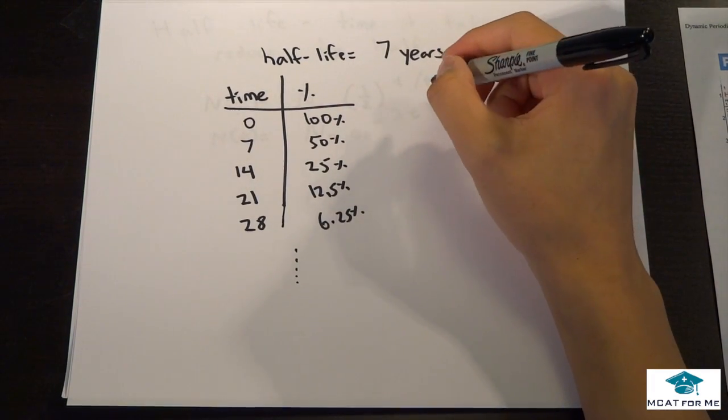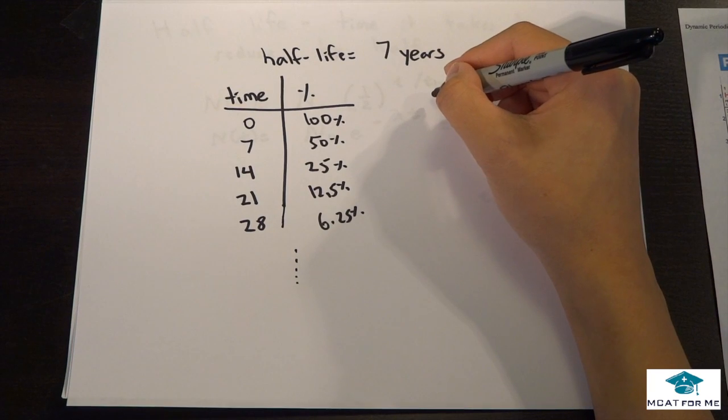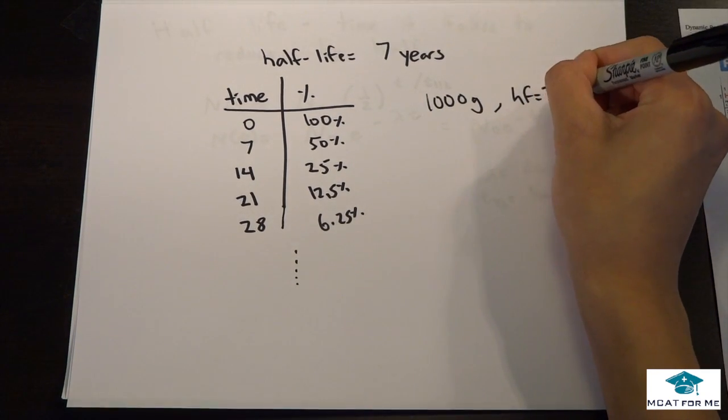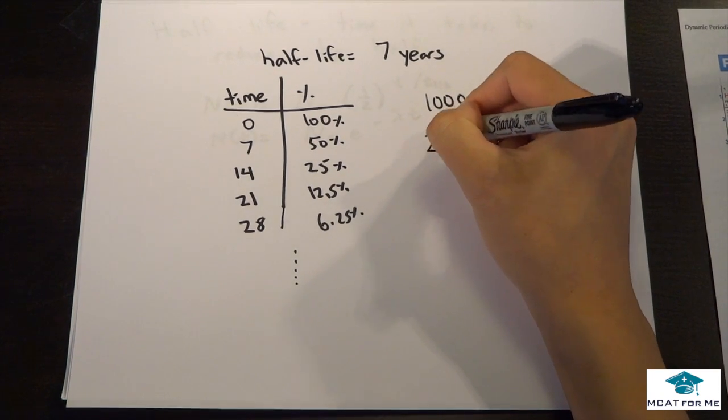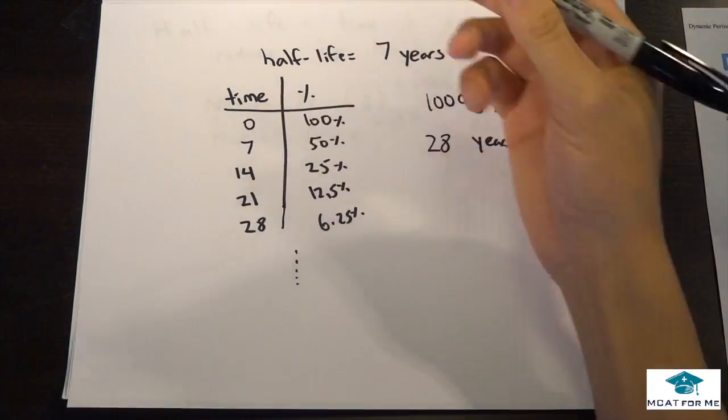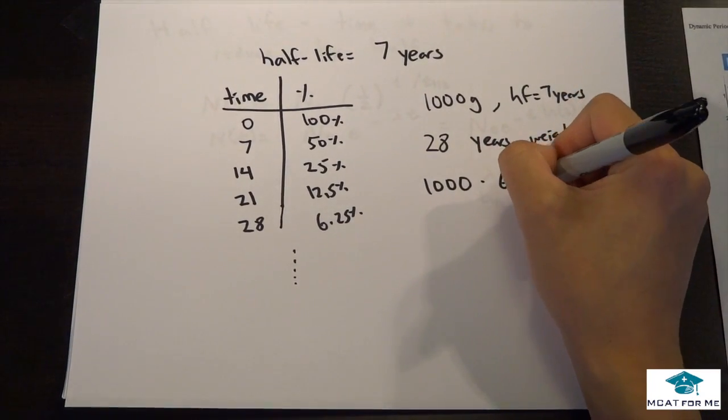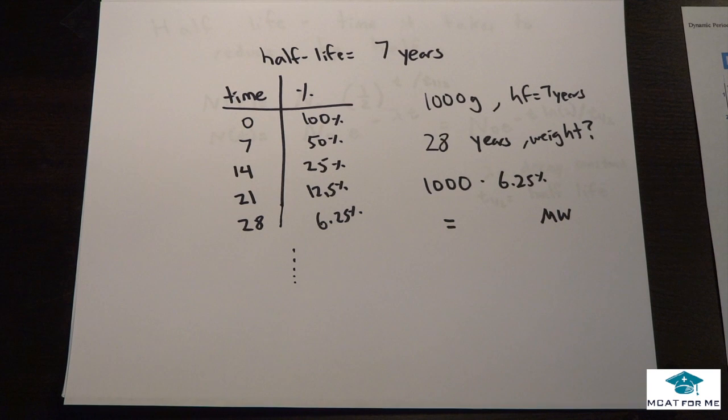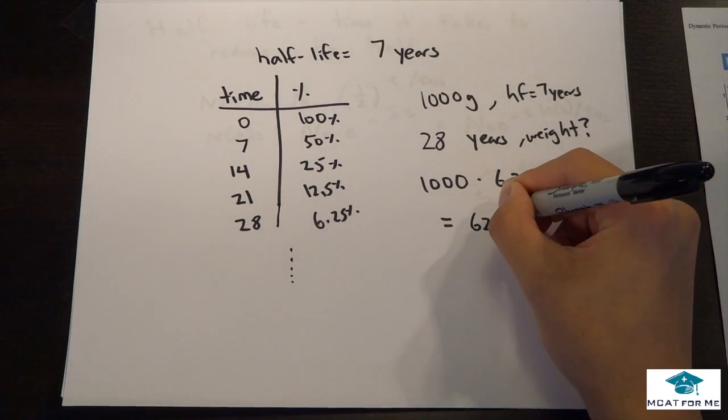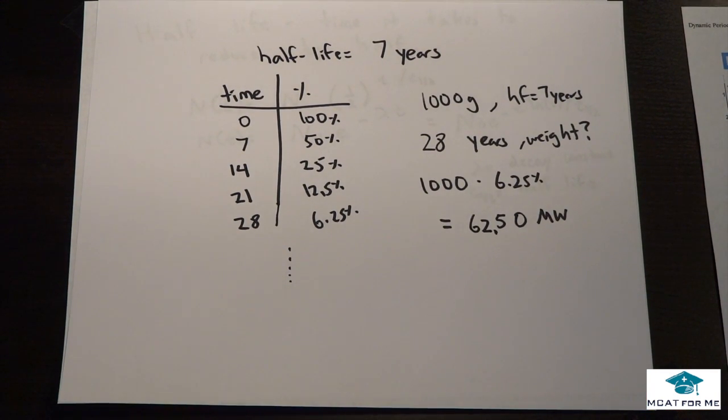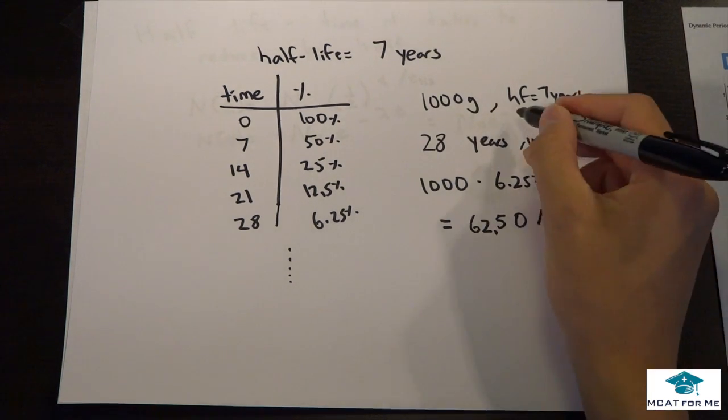So these are percentages, but say the question asked us, you have this molecule that is 1000 grams to start with. It has a half-life of 7 years. How heavy will it be in 28 years? So all we do is we made this table, and then we just do this. 1000 times 6.25%, and that will be our molecular weight at the end of all of this. And so yeah, pretty straightforward. It shouldn't be too hard. And if you want to know, this is 6, and then we just move the decimal like that. And so 62.5 grams is our molecular weight after 28 years if it has a half-life of 7.